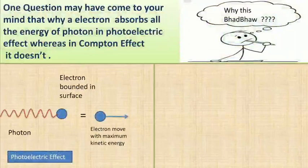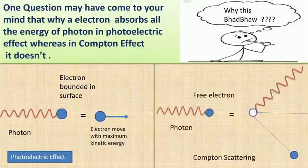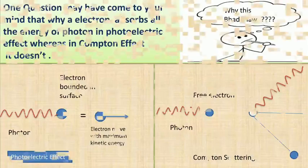In the photoelectric effect, when radiation of a certain suitable frequency is incident on the surface of a material, the electron bounded to the surface absorbs the entire energy of the photon and is emitted from the surface. But in Compton scattering, the incident photon interacts with a free electron not bounded to the surface, and is scattered at an angle with a lower frequency, while the electron receives an impulse and begins to move.